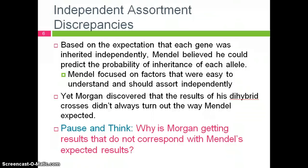Now that we have reviewed the basic concepts behind gene linkage, we can start to think about how it developed. Mendel believed that he could predict the inheritance of any allele because he based his ideas around the fact that each gene was inherited independently of all other genes. However, he focused on simple genes that would follow this pattern and ignored any complications. Years later, Morgan realized this oversight and began to search for a reason why the dihybrid crosses didn't always turn out the way he expected.